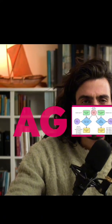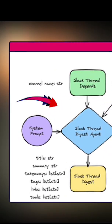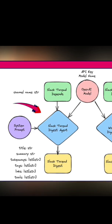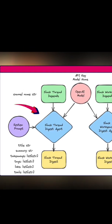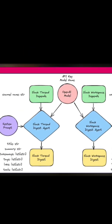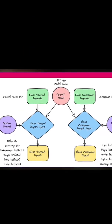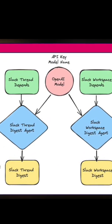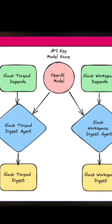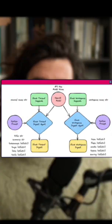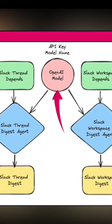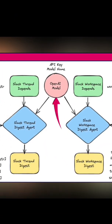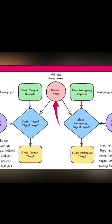The agents. The Slack thread digest agent and Slack workspace digest agent are our workhorses. The thread agent focuses on individual conversations while the workspace agent looks at the entire workspace. This is our OpenAI model that provides the intelligence to understand and summarize the Slack content.